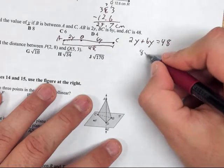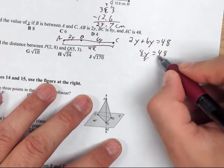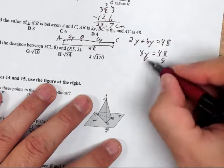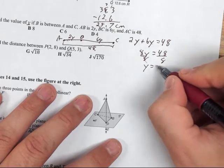2Y plus 6Y is 8Y equals 48. Divide both sides by 8. It gives me Y equals 48 divided by 8 is 6.